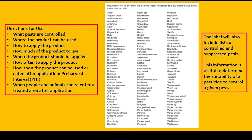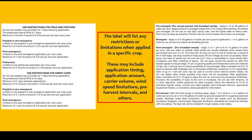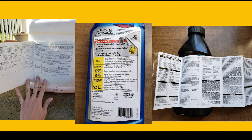The example given here is the weeds list that 2,4-D controls. This information is useful in determining if you are selecting the right product for your problem. Remember, the label will also list any restrictions or limitations when applied to specific crops. This may include application timing, amounts, carrier volume, wind speed limitations, pre-harvest intervals, and others. Be sure to read the entire label.